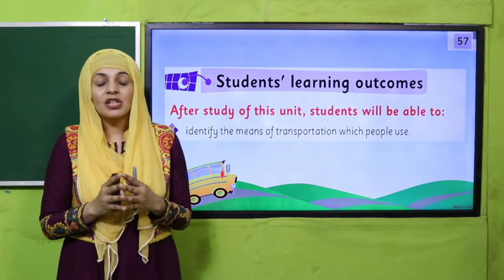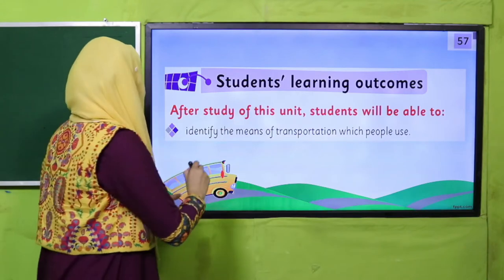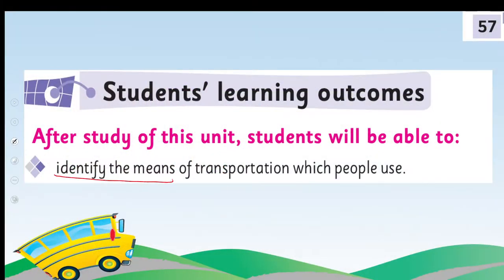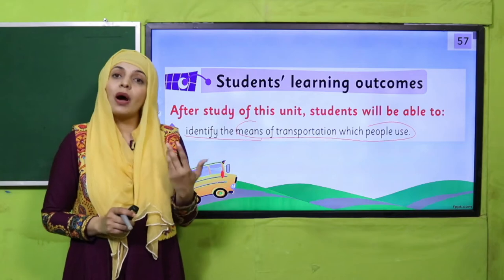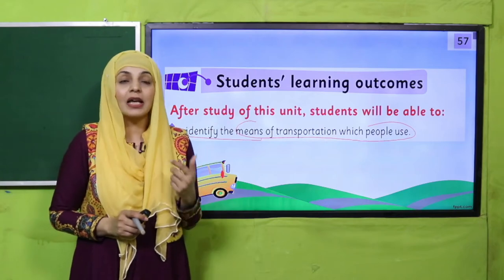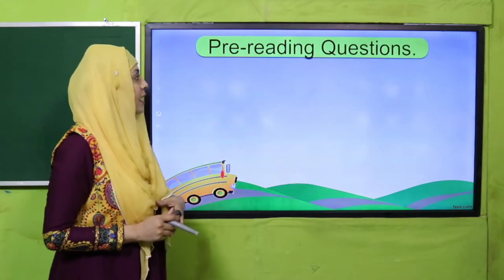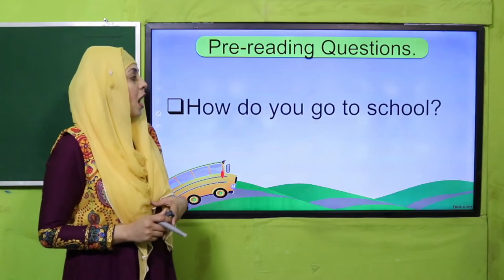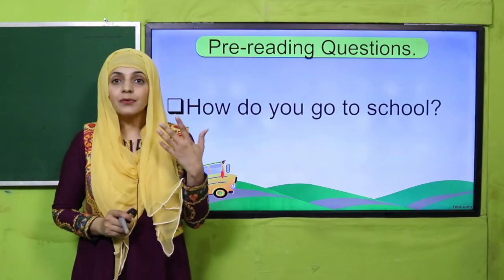Today's student learning outcome is: when children finish this lecture, everyone will be able to identify the means of transportation which people use. Students will be able to identify and recognize different means of transportation that people use. Here is the pre-reading question on your screen: How do you go to school?